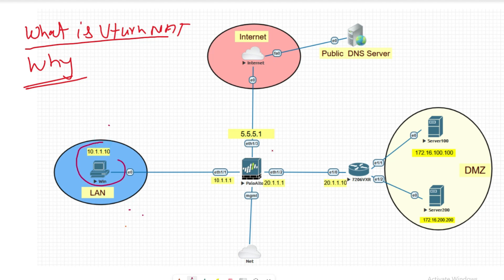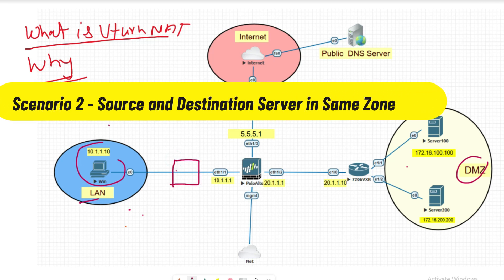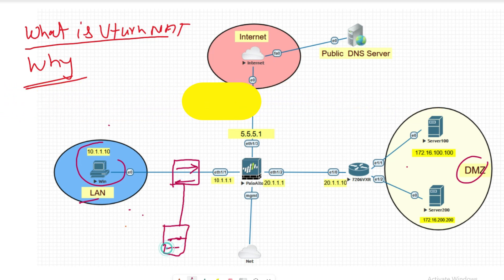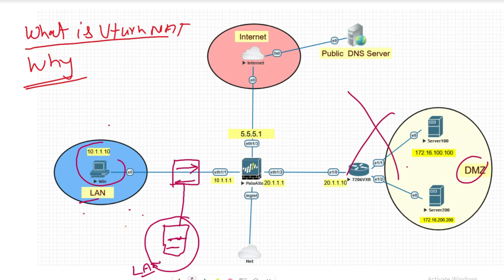This is the first scenario: when the source machine and destination machine are in different zones — for example, source machine in LAN zone and destination machine in DMZ zone. The second scenario is when we have a switch and the server is in the same zone as the source.